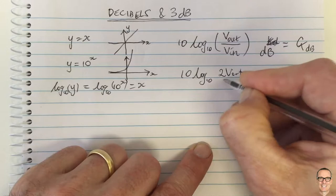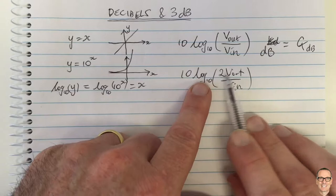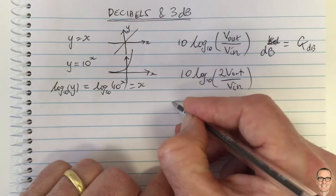We get 10 log to the base 10 of 2 V out divided by V in and we know that log of a times b equals log of a plus log of b...